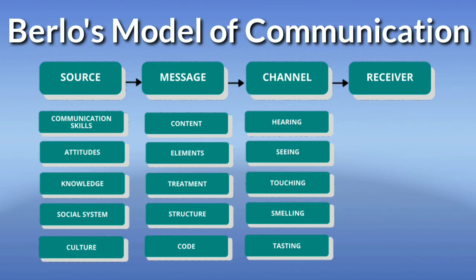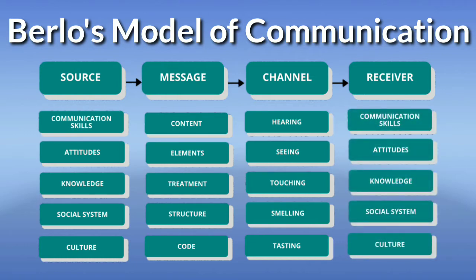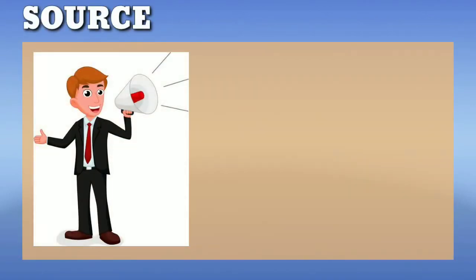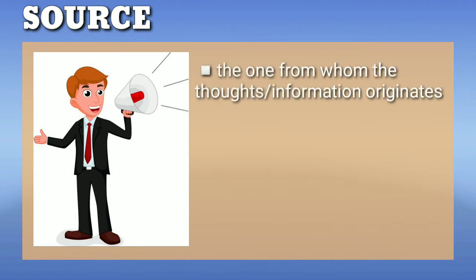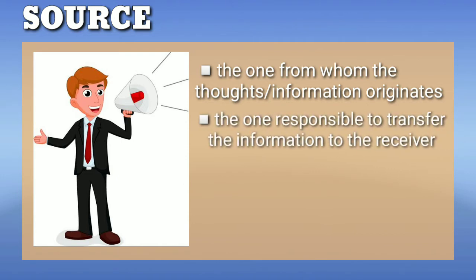On the receiver, the same factors affect the communication process — just like the source, we have communication skills, attitudes, knowledge, social system, and culture. The source is also known as the sender — the one from whom the thoughts or information originate. He is responsible for transferring the information to the receiver after carefully putting his thoughts into words.